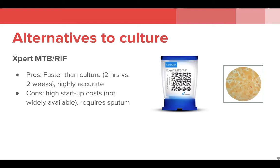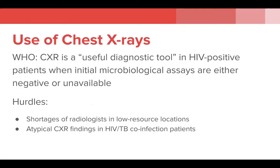It also requires sputum, which can be difficult to obtain, particularly in patients with HIV who are often sputum-scarce. As a result of the limited availability of expert testing and the cumbersome nature of culture diagnosis, a variety of adjunct diagnostic tools are commonly used in practice. Perhaps the most important is the chest x-ray, which can be quickly obtained at many medical centers. However, there are shortages of radiologists in many low-resource settings, and patients with both HIV and TB often don't have the typical cavitary lesions on chest x-ray, making diagnosis a particularly challenging task.